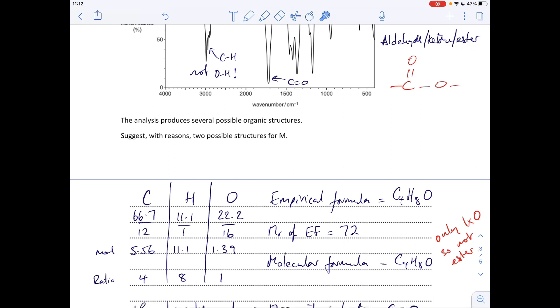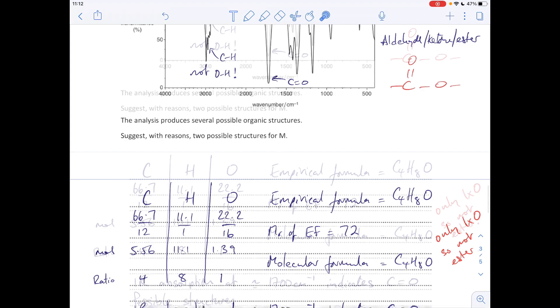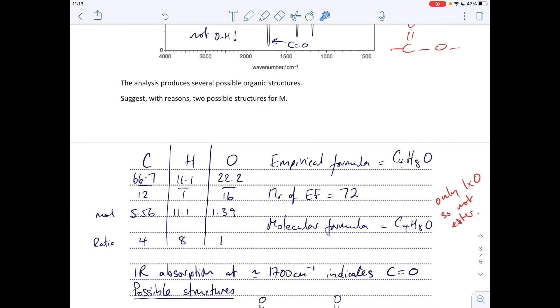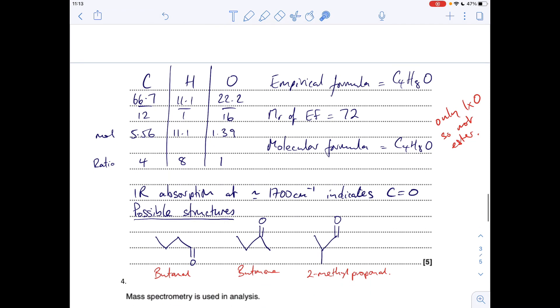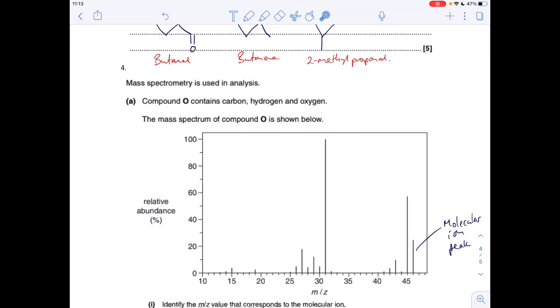Okay, so moving on, the infrared we've got that absorption at 1700 centimeters to the minus one, so it indicates the presence of a C double bond O. So what are the possible structures? Well it could be butanal, butanone, or 2-methyl propanal. So any two of those would be accepted.